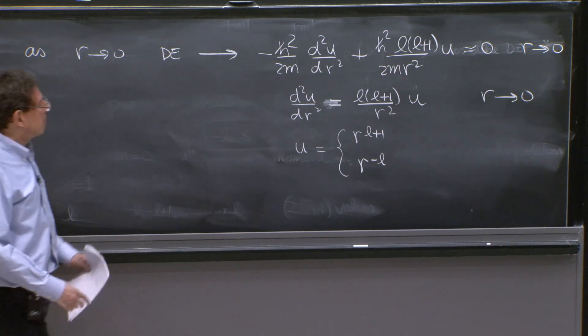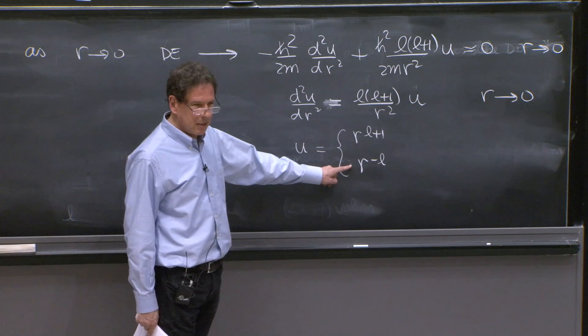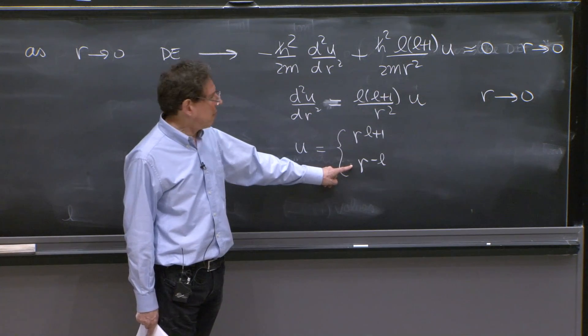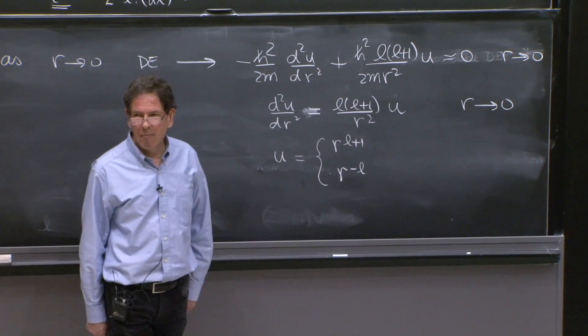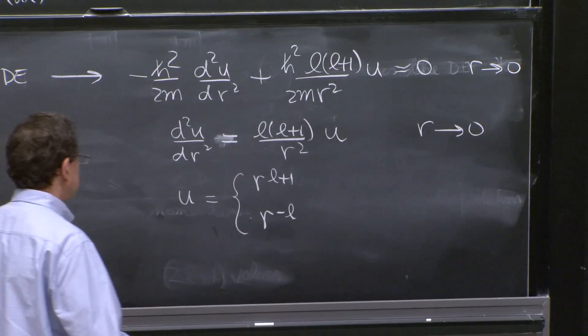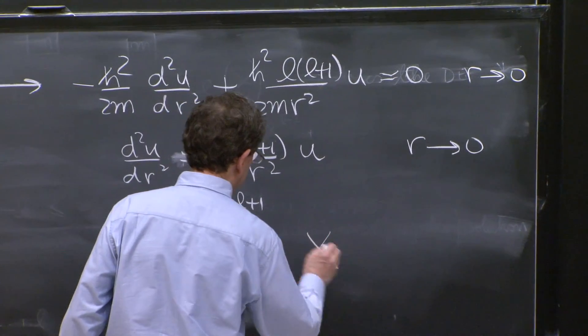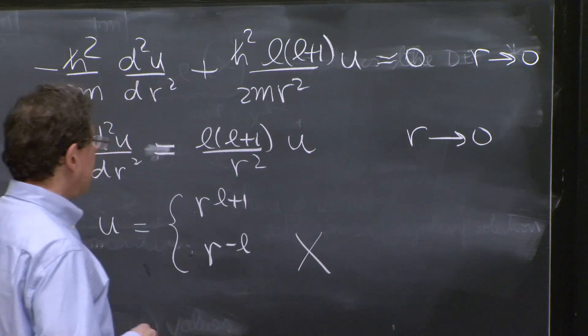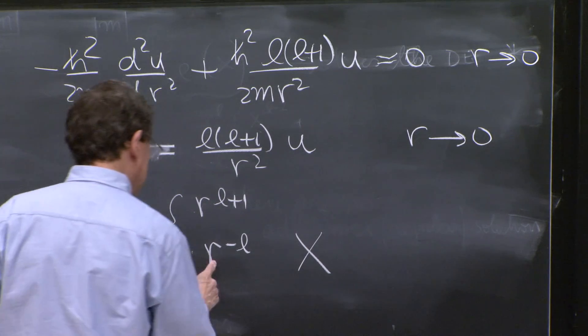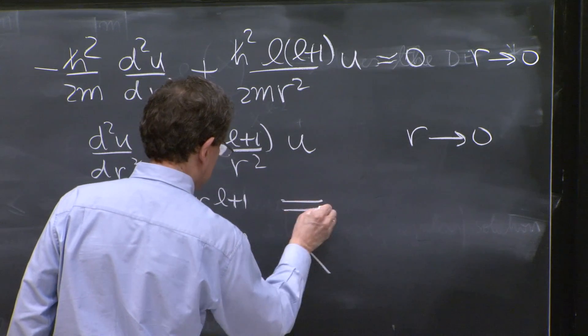Or r^(-l) also solves the equation. As you could imagine, this is going to be problematic in general. It's too divergent. It will not be possible to normalize in general for arbitrary values of l. So this is a very brief analysis. I'm not going into all the detail that probably this deserves at this moment. But this is ruled out, and this is ruled in.